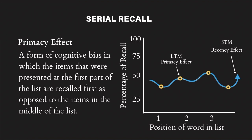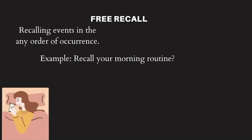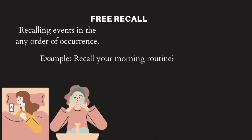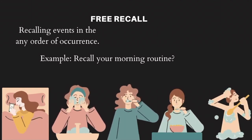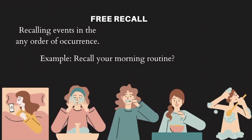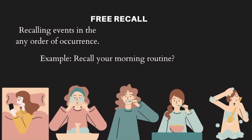The next type of recall is called free recall. Free recall refers to recalling information in any order of occurrence, without any regard for the order in which they occurred. For example, if your friend asks you to recall your morning routine and you recall waking up first, then other activities like washing your face, brushing your teeth, eating your breakfast and bathing in no particular order, you just undertook free recall — even though the actual order of those activities was not maintained.